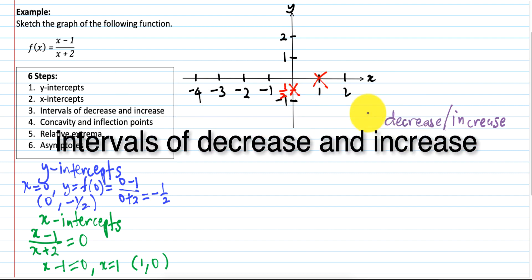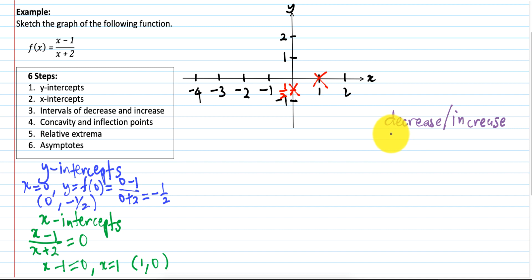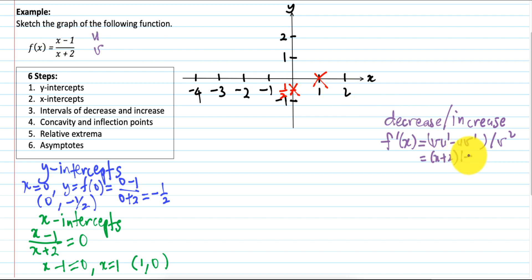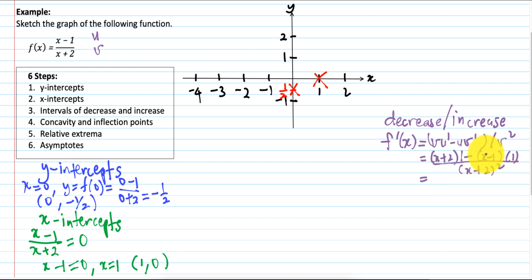Step 3: Intervals of increase and decrease. First, find the first derivative F'(x). This is a rational function, so we use the quotient rule. U is X minus 1, V is X plus 2. The formula is (V·U' minus U·V') over V squared. V is (X+2), U' is 1, minus U which is (X minus 1), and the derivative of (X plus 2) is 1, divided by (X plus 2) squared. This simplifies to 3 over (X plus 2) squared.